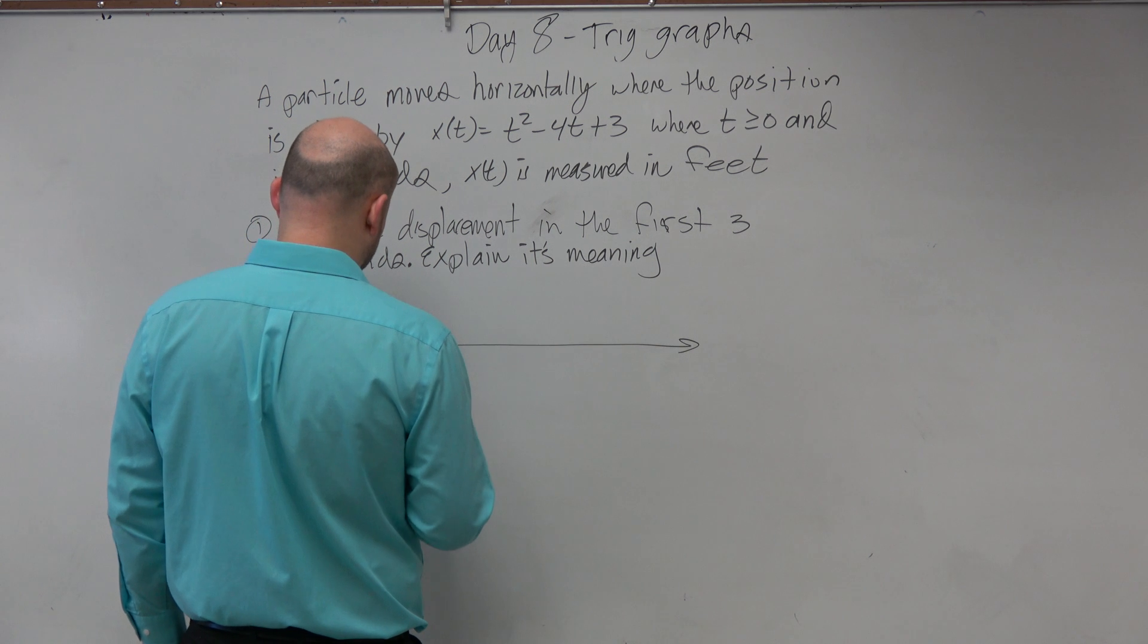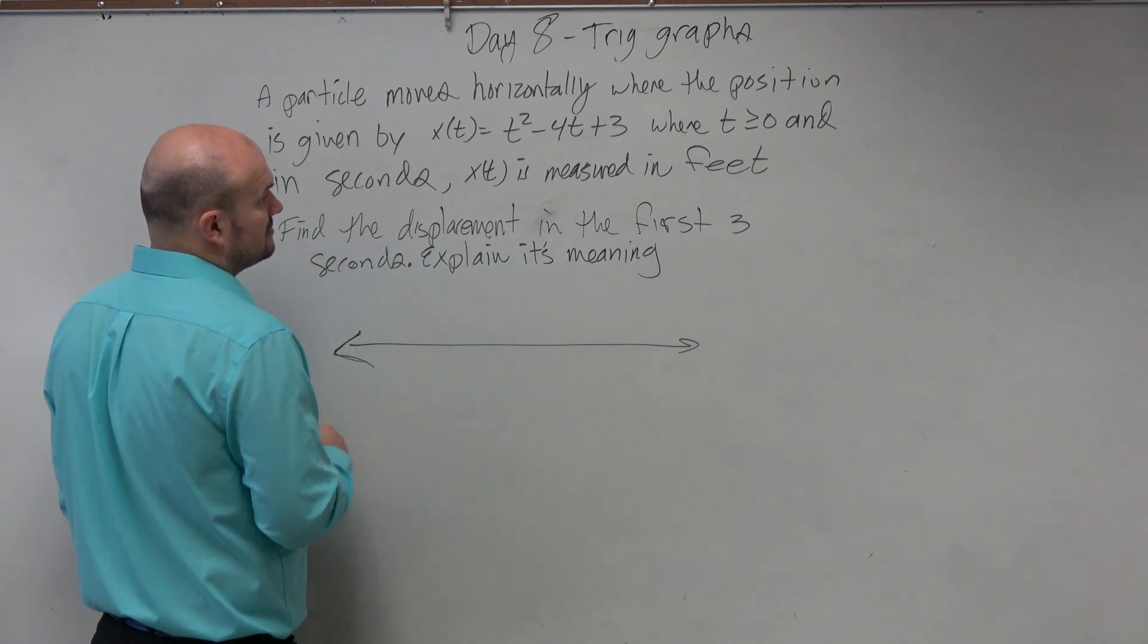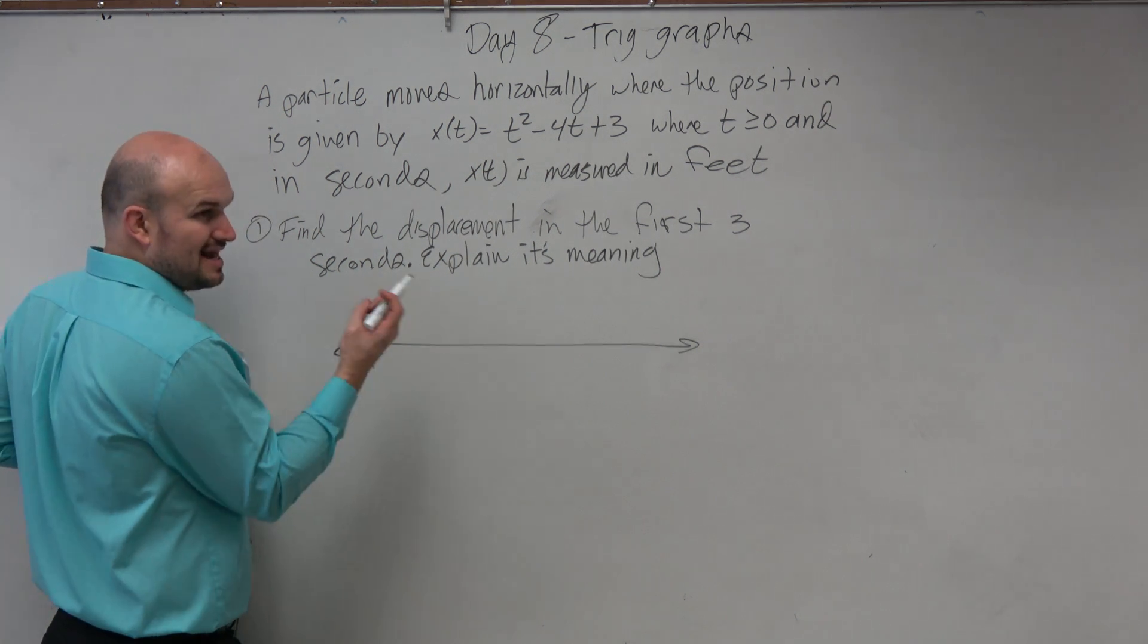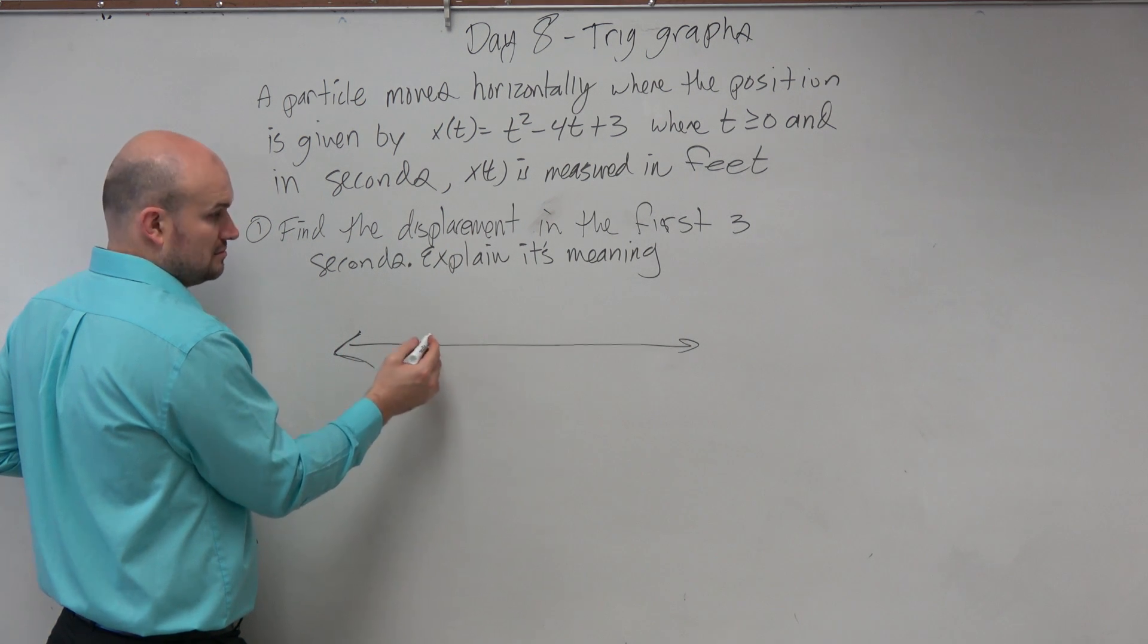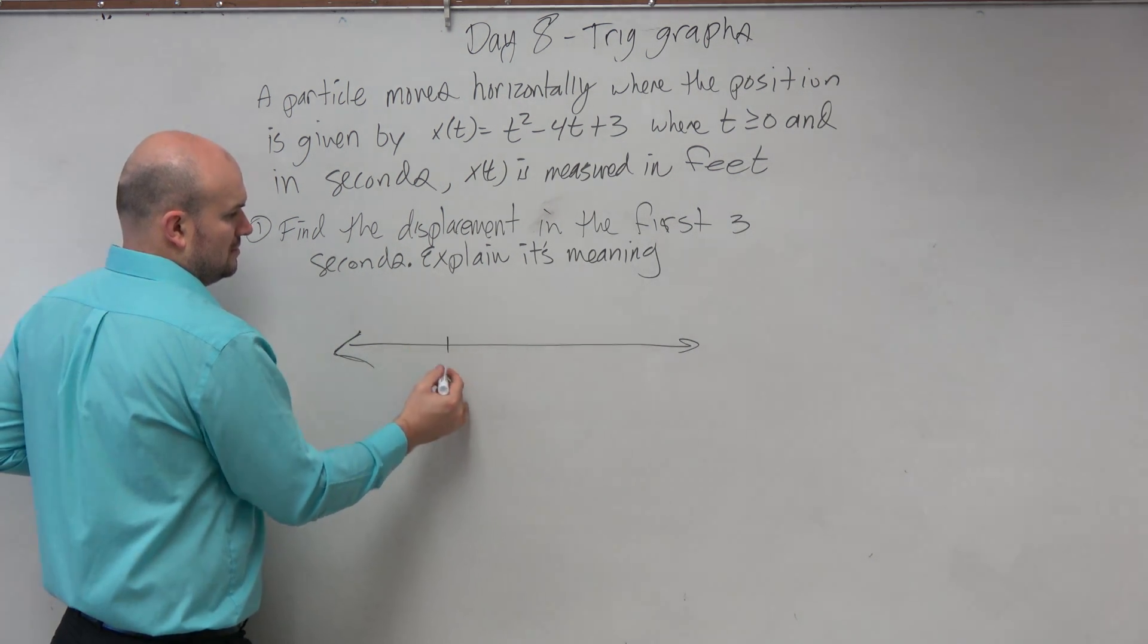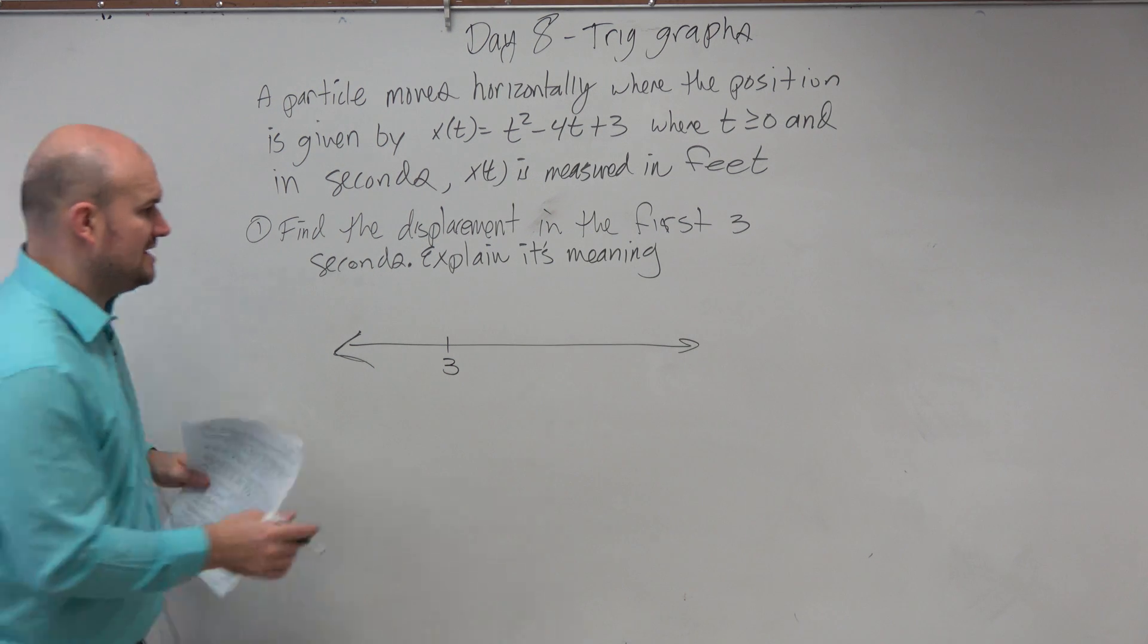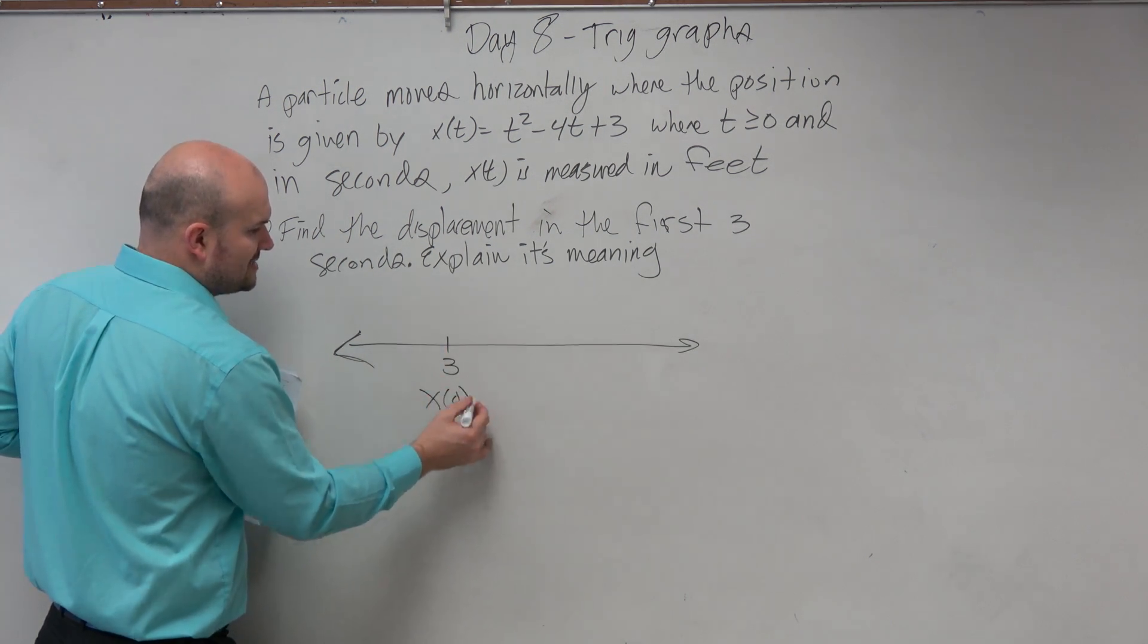Let's first figure out at x of 0, where are we? So when time is 0, where are we at? Well, what happens when I plug in 0? I'm at 3, right? And then basically what we say is that's where you're at at x of 0. So x of 0 equals 3.